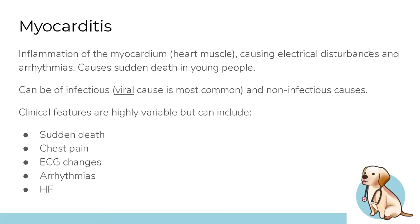Myocarditis is inflammation of the myocardium — the heart muscle — and can lead to different arrhythmias. It's unfortunately a common cause of sudden death in young people and is often diagnosed postmortem due to lack of preceding symptoms. The most important thing to know about myocarditis is that viral infection is the most common cause, though it can also be non-infectious.